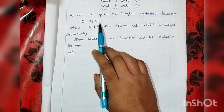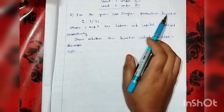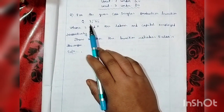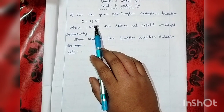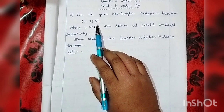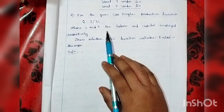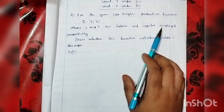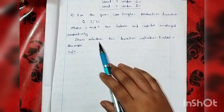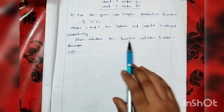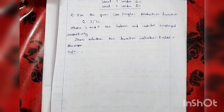For a given Cobb-Douglas production function, Q equal to 3 root over KL, where L and K are Labor and Capital employed respectively. So, we need to check whether the function satisfies Euler's theorem.